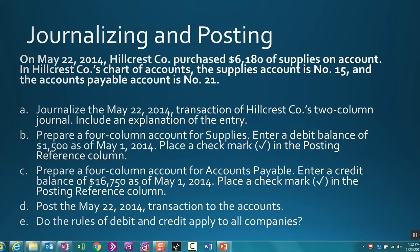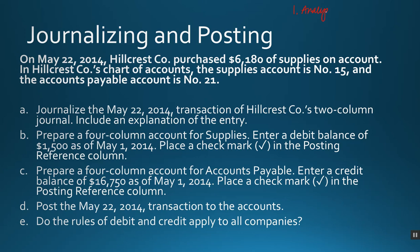Up to this point we have taken a look at how to use the T-account. Now we want to go further. Our approach is to start the first four steps of the accounting cycle: number one, we analyze the transactions; number two, we record those transactions to the journal; number three, we post the transactions to the ledger; and number four, we create the unadjusted trial balance.